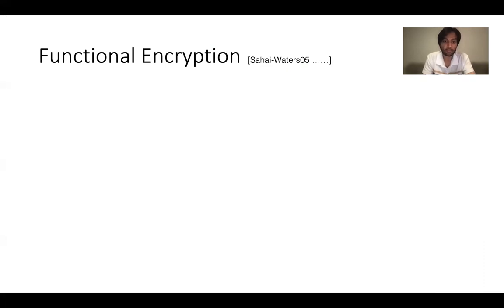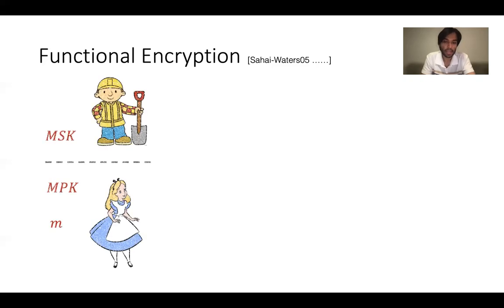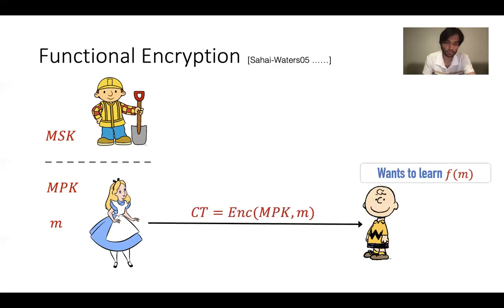The intuition behind function encryption can be understood using the following example. Suppose we have three parties: Alice, Bob, and Charlie. Alice has sensitive data M, Bob has the secret key, and Charlie wants to learn the evaluation of a function F on the secret data. In order to compute this, Bob can simply give the secret key to Charlie, Charlie can decrypt it, compute F, and learn F of M.